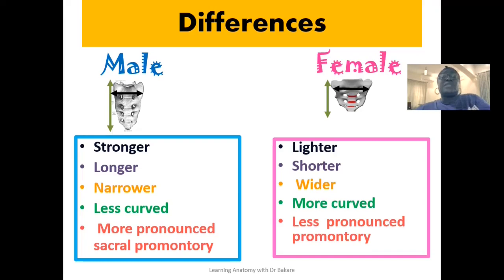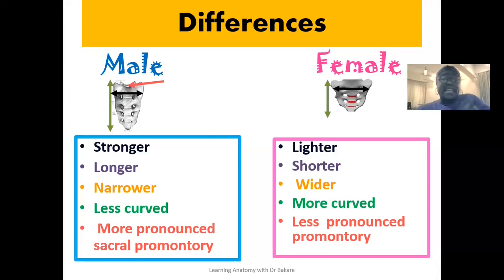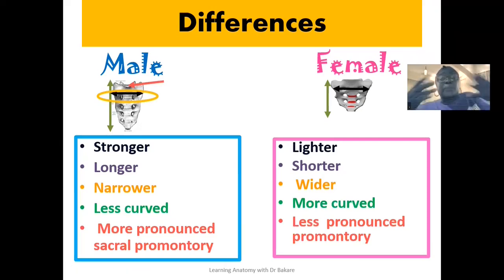The sacral promontory is an important landmark in the orientation of the pelvic inlet or the pelvic brim. In this image of the male sacrum, the sacral promontory is located here at this point — it is a bulge or eminence created by the first sacral vertebra, the most superior part, and it dips into the pelvic inlet. The pelvic inlet orientation is highlighted here in yellow, and the sacral promontory forms its posterior boundary. If this bulge is more pronounced, it dips into the pelvic inlet, thereby reducing the space created around this region.